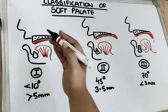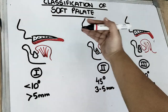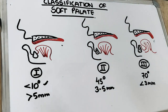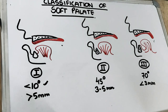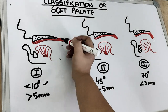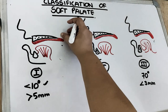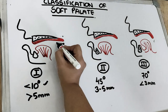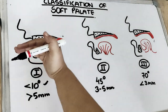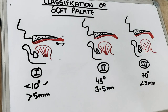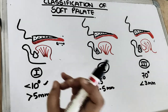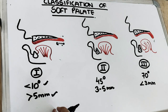In Class 1, the angle the soft palate makes with the hard palate is nearly the same — almost horizontal. The movement is less than 10 degrees while the patient is speaking. So the denture ends at the PPS, and we have a large tissue coverage of more than 5 millimeters. Because the soft palate is nearly horizontal, we can extend our denture more posteriorly, giving us good tissue coverage for retention.